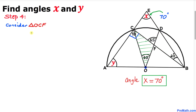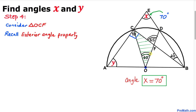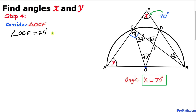In this next step, let's consider triangle OCF and recall the exterior angle property again. The angle of 65 degrees is an exterior angle equal to the sum of the two opposite interior angles. Since one angle is 65 degrees and the other is 40 degrees, angle OCF turns out to be 25 degrees.